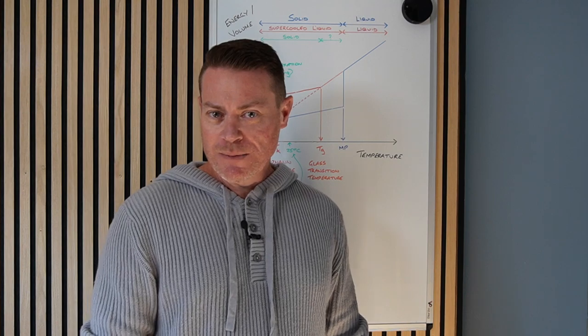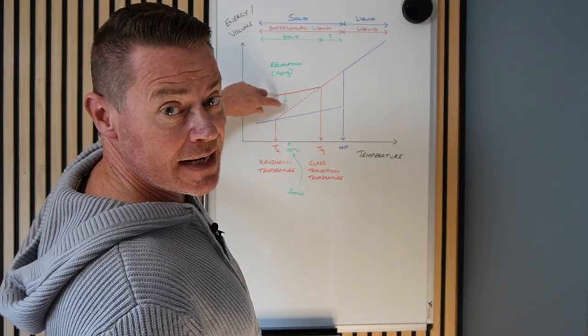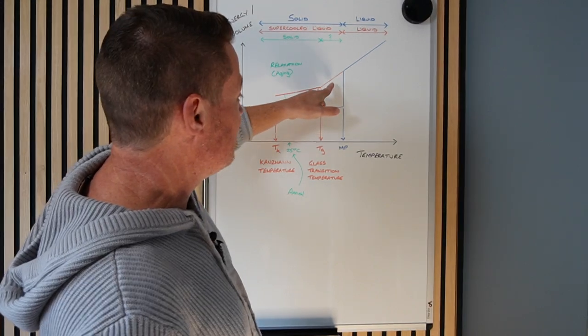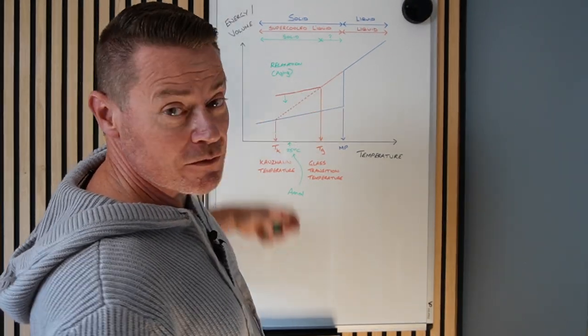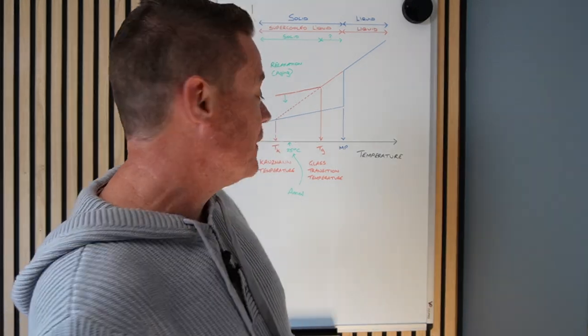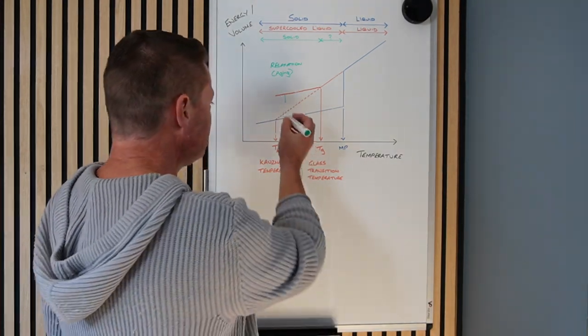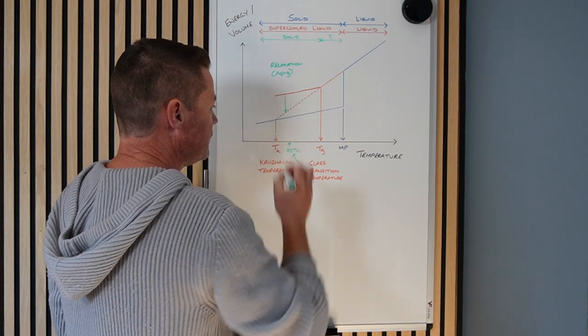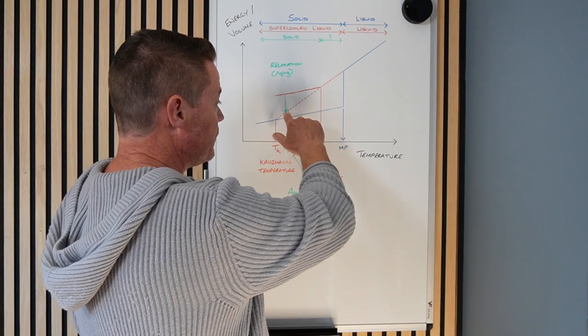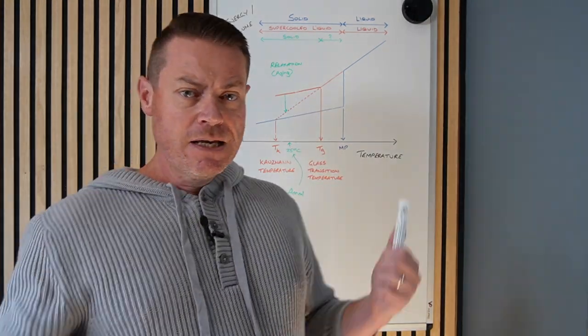So one more thing you might ask me before we end this video, and this would be a good question, I've got to say. You might say, Simon, if the material relaxes a lot, so this arrow gets longer, is there going to become a point where the arrow is going to touch this dotted line? The dotted line being where our super-cooled liquid would have gone if we hadn't gone through the glass transition temperature. And I would say, wow, of all the questions you could have asked me, that was a really good one, especially for this video about relaxation. So that's an excellent question, and the answer is absolutely. That can, in principle, happen.